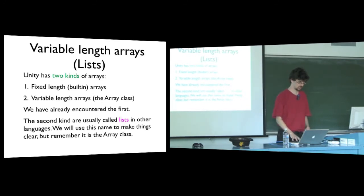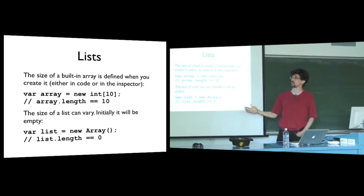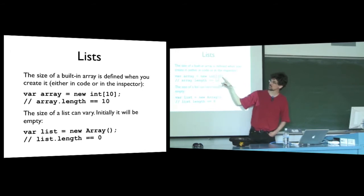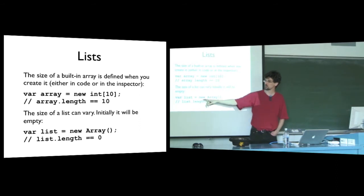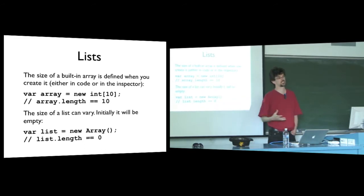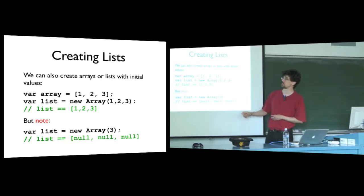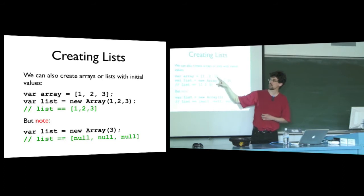When we create a built-in fixed-length array, we define the length when we create it. For example, creating a new array of integers like this gives an array of 10 integers, and that length will never change. On the other hand, the length of a list can vary. If we create a new list with 'new Array()' and empty parentheses, it will be a new list of length 0. We can add things to that list and remove things from it, and it'll grow and shrink as we do. We can also assign a list by value — saying 'new Array(1, 2, 3)' will create a list with values 1, 2, and 3 in order.